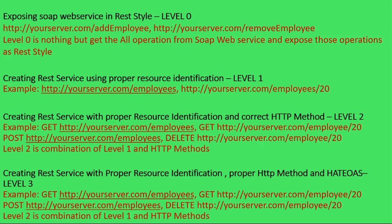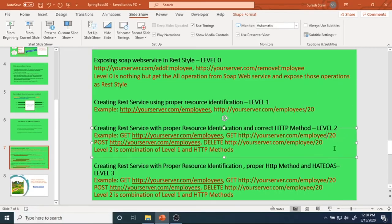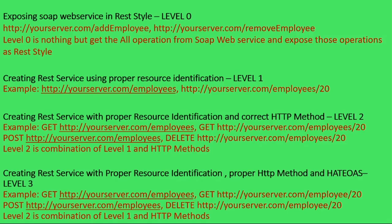For example, GET yourserver.com/employees means I can get all employees. In Level 2, we are thinking about a resource plus what kind of HTTP method to use on that resource. While viewing all employees, I want to use the right HTTP method — that is GET. While deleting an employee, I want to use the right HTTP method — that is DELETE. While creating an employee, I want to use the right HTTP method — that is POST. So in Level 2, we are using proper resource identification plus proper HTTP method.